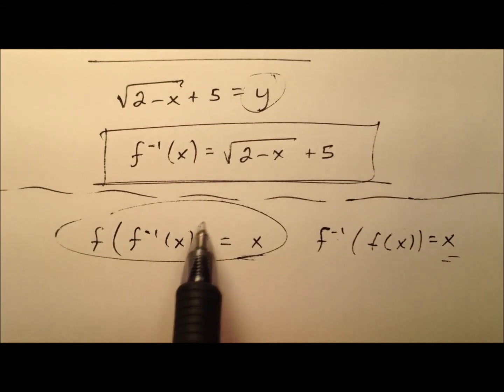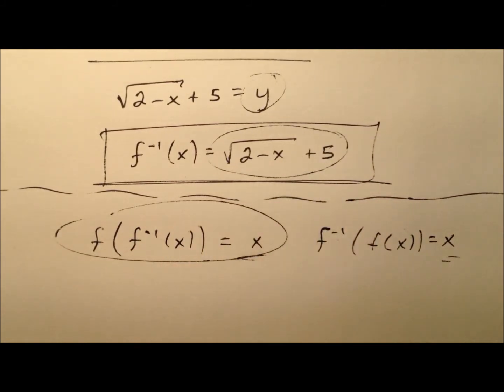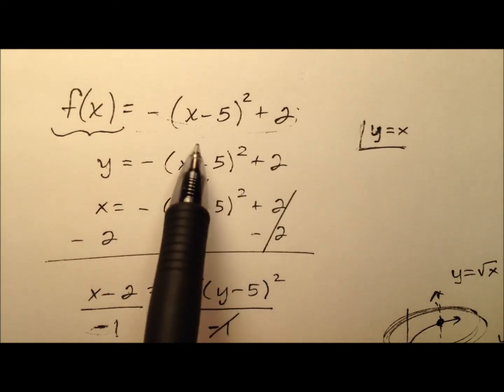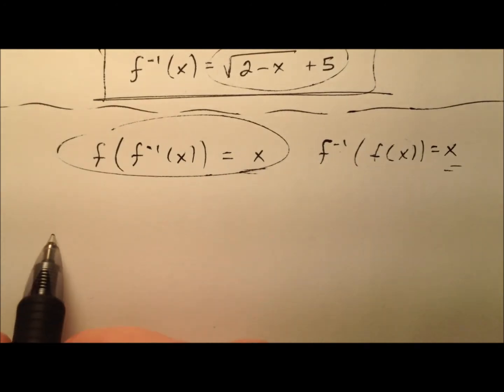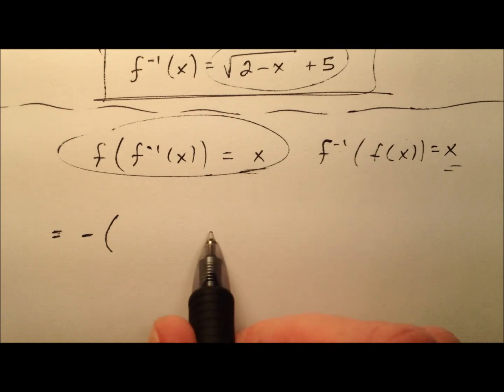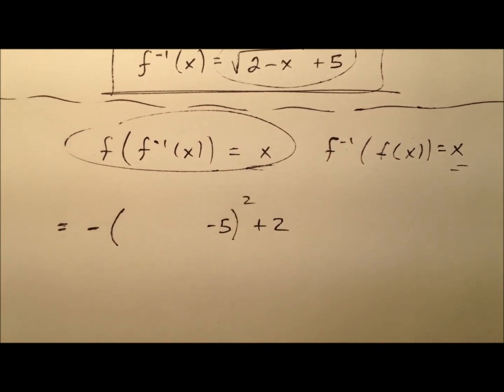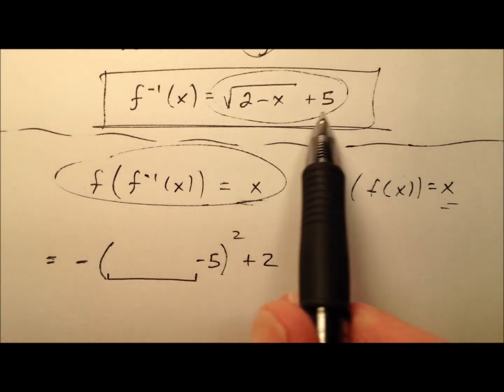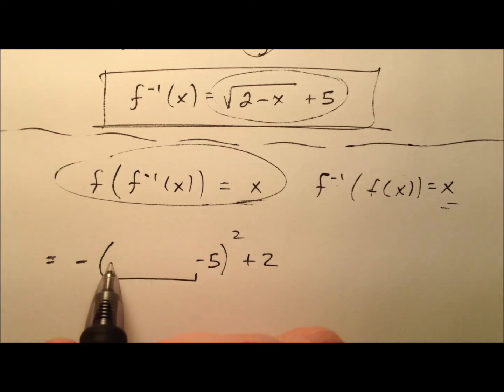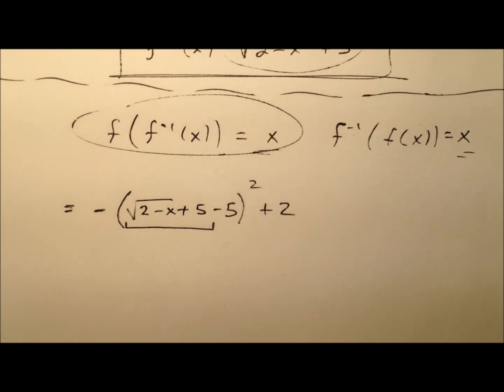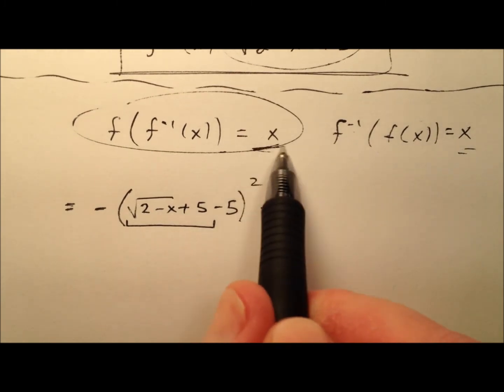And so we're going to take the inverse, which is this guy, and we're going to substitute it in or plug it in to this function right here, in for the x. So this will look like it's the opposite of x minus 5 quantity squared and then plus 2. So right here in this little area is going to be our inverse function. So we have the square root of 2 minus x plus 5. So we're going to work this out and hopefully we get x.